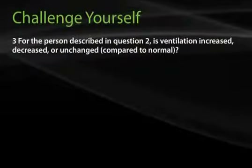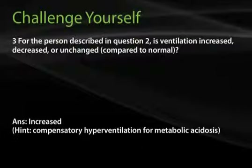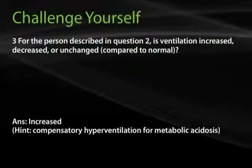Question 3: For the person described in question 2, is ventilation increased, decreased, or unchanged compared to normal? The answer is increased. The low plasma bicarbonate concentration and low pH indicate metabolic acidosis. Thus, the respiratory compensation is hyperventilation, reflected by the low pCO2 value, suggesting that ventilation is increased in this individual.